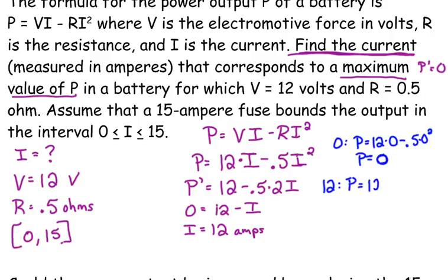We need to check our critical point. Plugging this into the P function. So, 12 times 12 minus 1.5 times 12 squared. So, that's 144 minus 1.5 times 144. So, 1.5 times 144 would be 72. So, when the current is 12, the power output is 72.